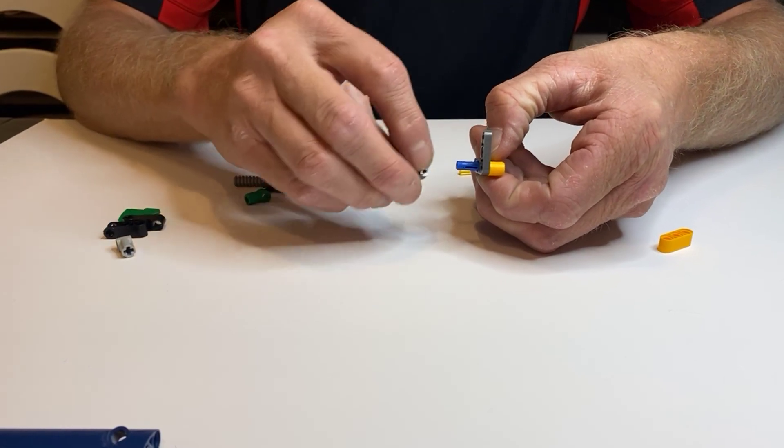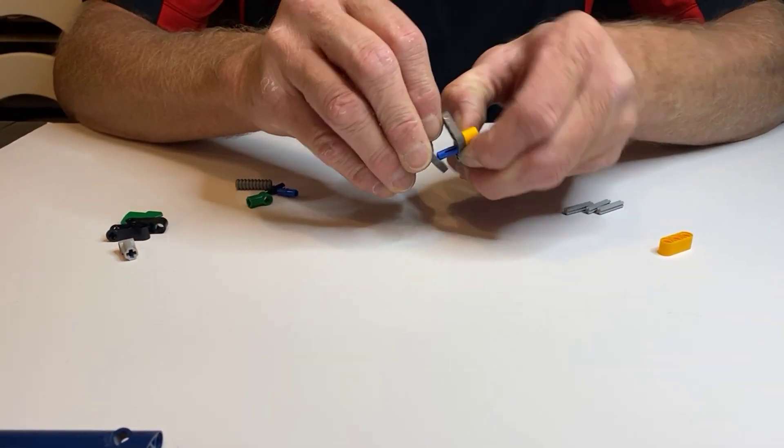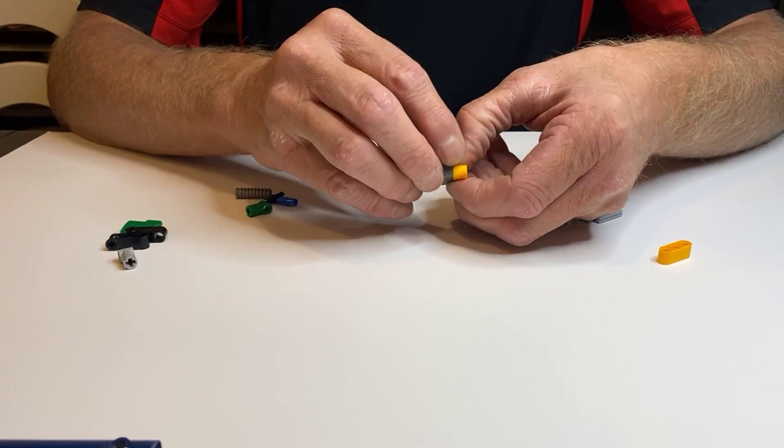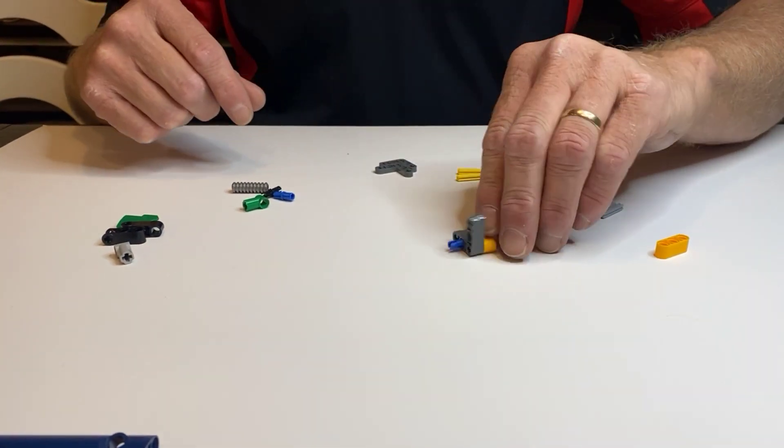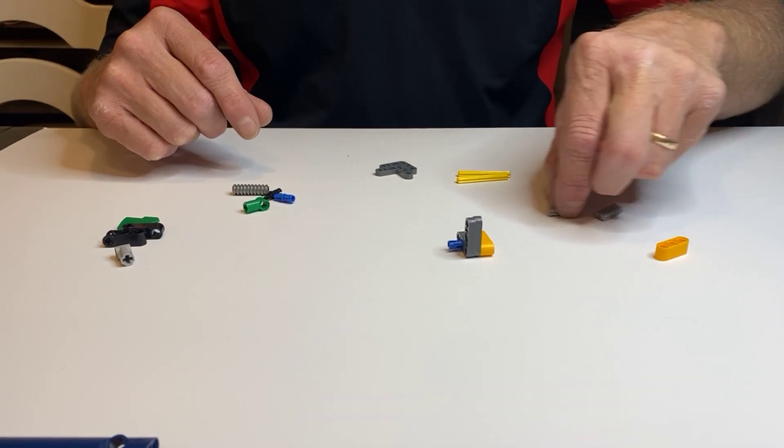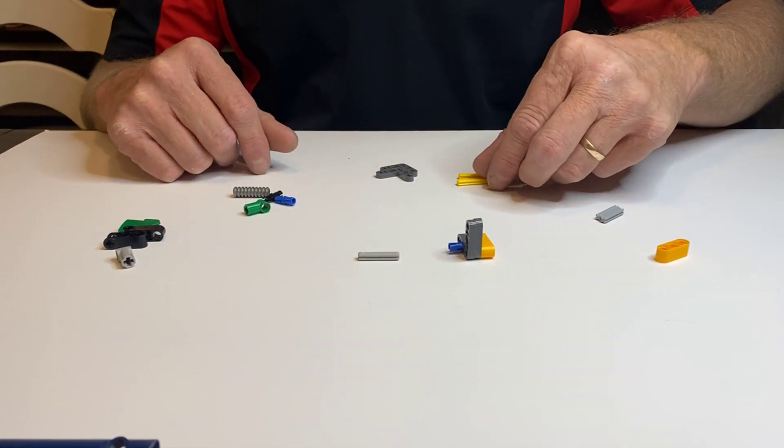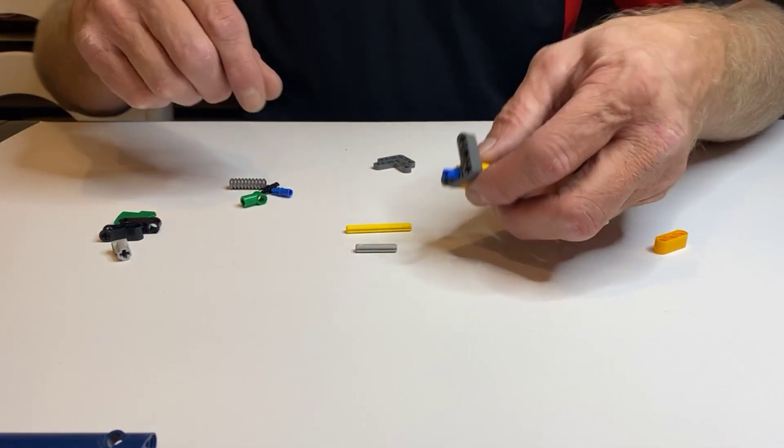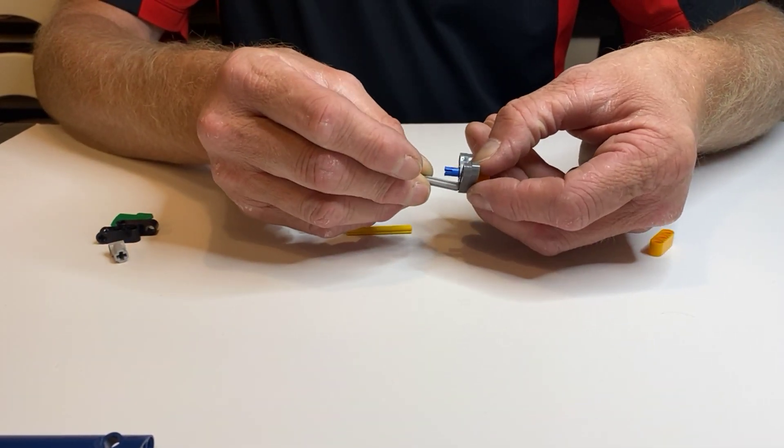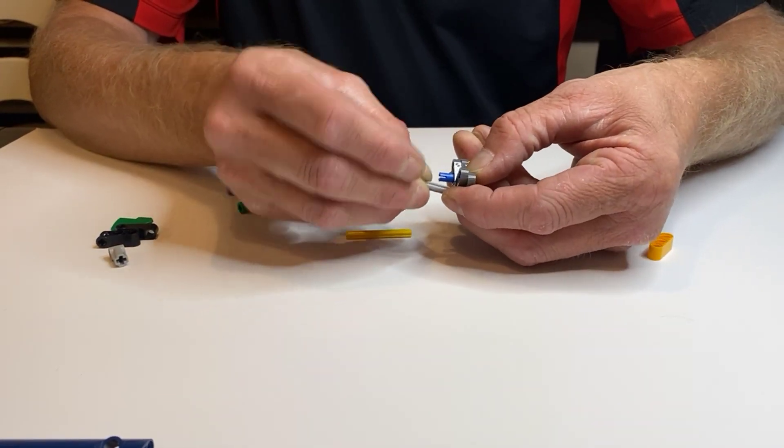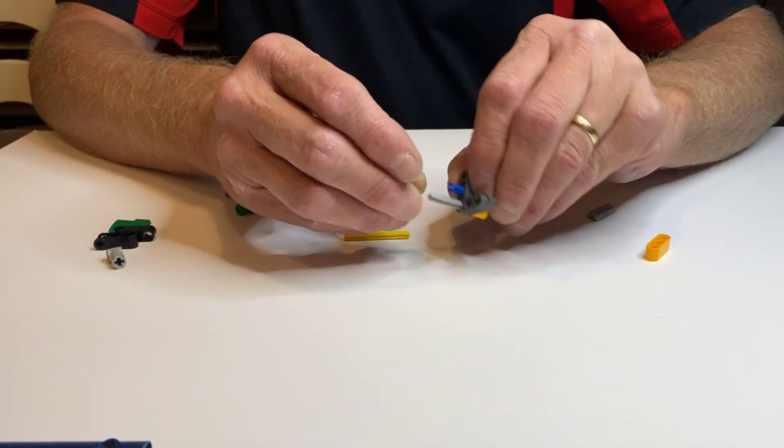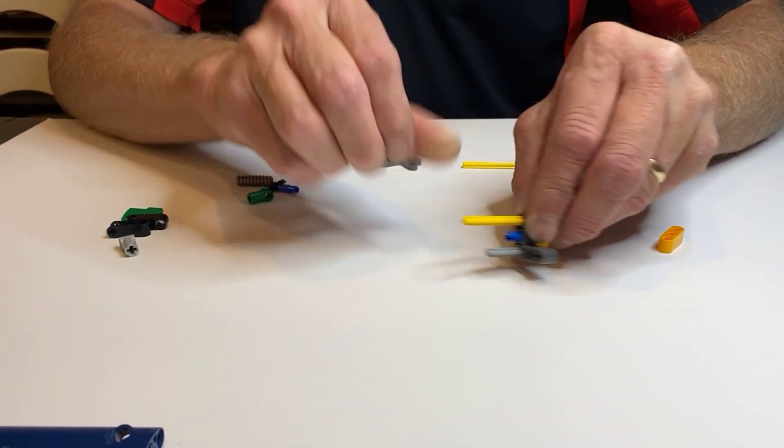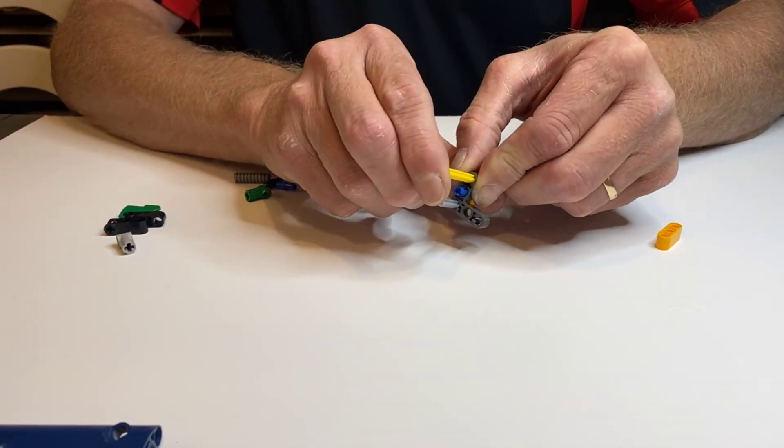Put them in there like this. Next, we want to take a 3m axle and the 5m axle, put them together. Put the 3m towards the front and the elbow, and we're going to put the yellow one, the 5m, towards the back like this. Push the yellow one so that it comes to the end.